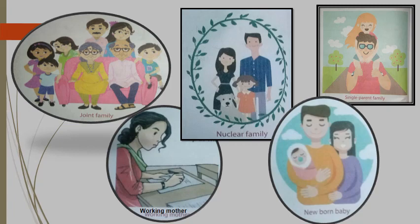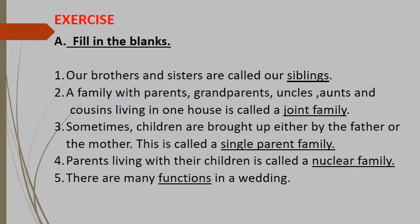Now children, let us do the exercise of this session. Question A: Fill in the blanks. Number one: Our brothers and sisters are called our dash. The answer is siblings. Number two: A family with parents, grandparents, uncles, aunts and cousins living in one house is called a dash. The answer is joint family.